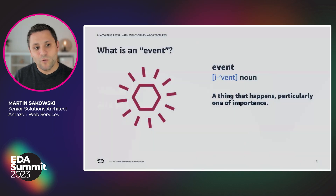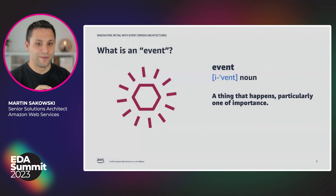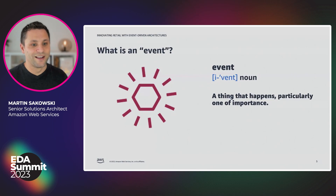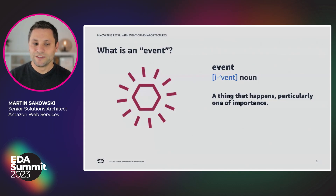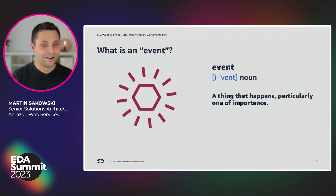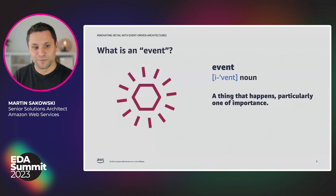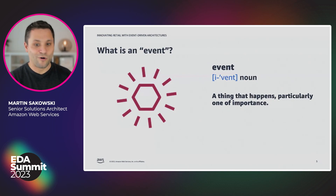Before we dive into these architecture patterns, we first need to understand the core element of an event-driven architecture — the event itself. An event is a thing that happens that might be of importance for the system. An event can be a change in state or an update — like a coffee machine that has been bought. Events are immutable, meaning they cannot be changed or deleted, and they are ordered in the sequential order of occurrence.